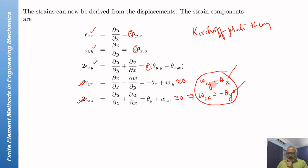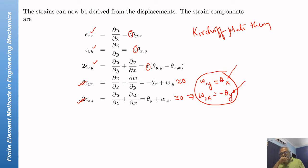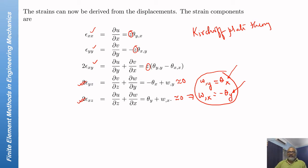Remember that in Euler-Bernoulli beam theory there is only one theta, given by del W del X. Here there are two thetas, as we showed at the beginning of this lecture, and these two thetas are given by the partial derivatives of the vertical displacement function W(X,Y).